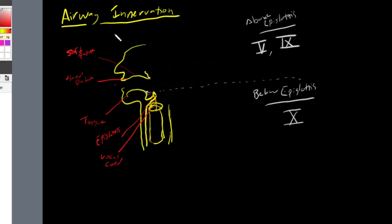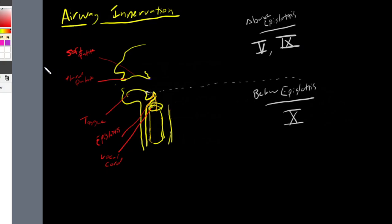We'll probably split this video into two — one talking about sensation above the epiglottis, and then we'll go ahead and talk about below the epiglottis, just to keep things brief. So focusing on above the epiglottis, our trigeminal nerve and our glossopharyngeal nerve are going to be involved in sensation.